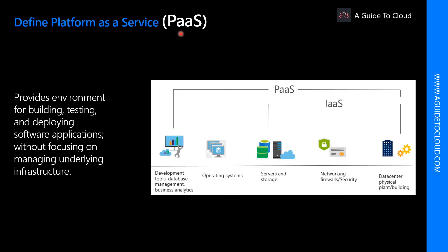Let's understand PaaS, or Platform as a Service, in detail. PaaS provides an environment for building, testing, and deploying software applications. The goal of PaaS is to help create an application as quickly as possible without having to worry about managing the underlying infrastructure. For example, when deploying a web application using PaaS, you don't have to install an operating system, web server, or even software updates. PaaS is a complete development and deployment environment in the cloud. Common usage scenarios for PaaS include development frameworks, analytics, or business intelligence.